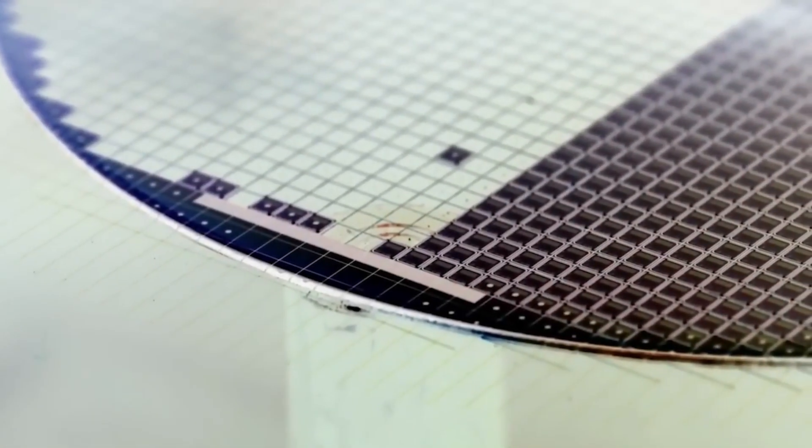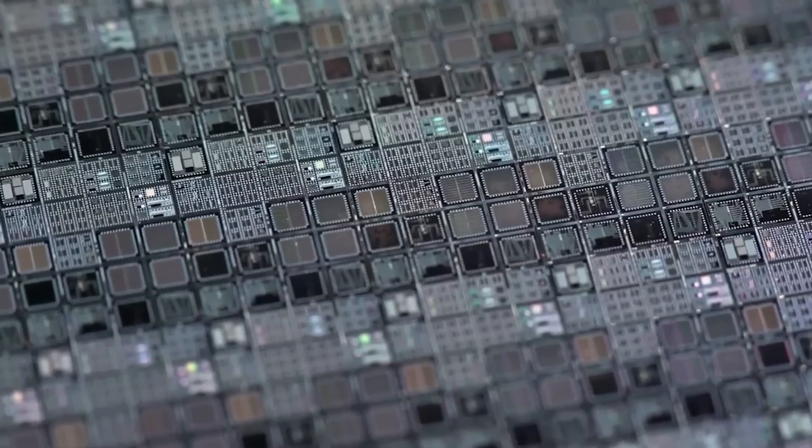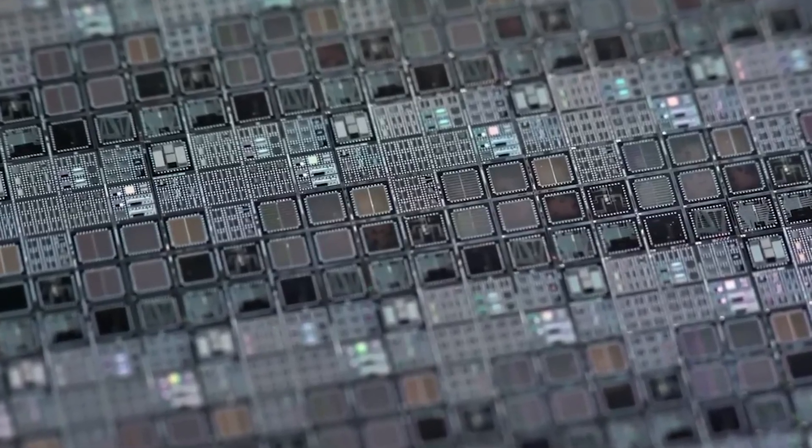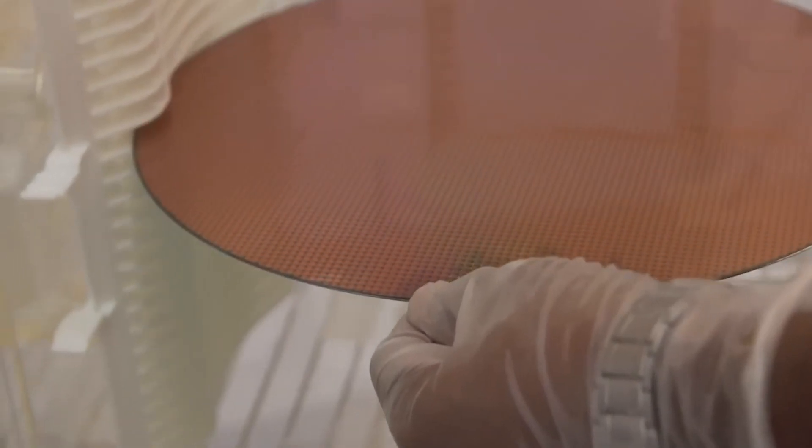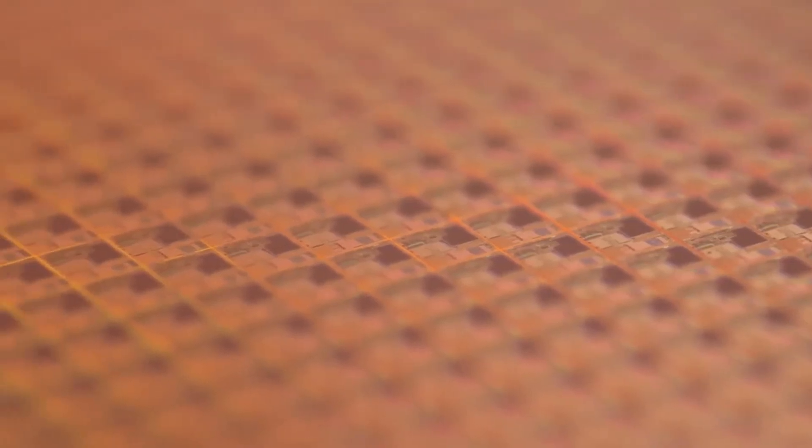The areas that are not exposed build up the transistors layer by layer like many skyscrapers. The result is hundreds of microchips, each of which has more than one billion transistors.